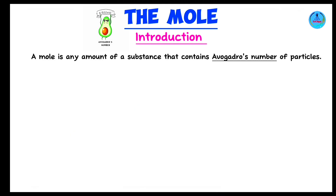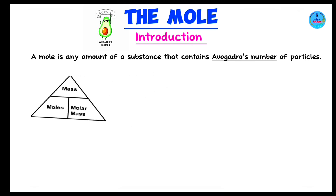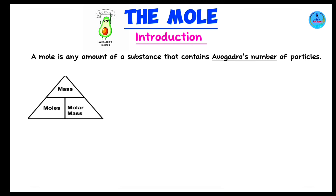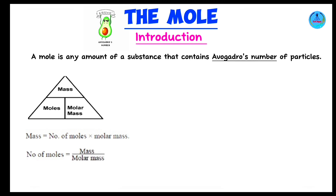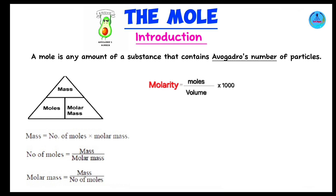Before we start the calculations, here are the three formulas you need. The first relates mass, moles, and molar mass: mass = moles × molar mass. If you want to calculate the number of moles, use: moles = mass ÷ molar mass. If you want the molar mass, use: molar mass = mass ÷ moles. This formula is very versatile — just rearrange as needed.